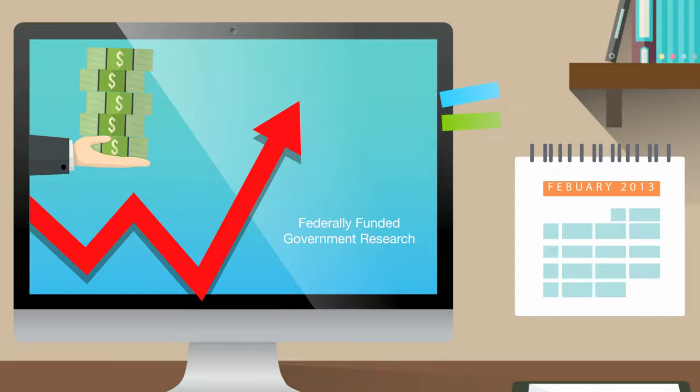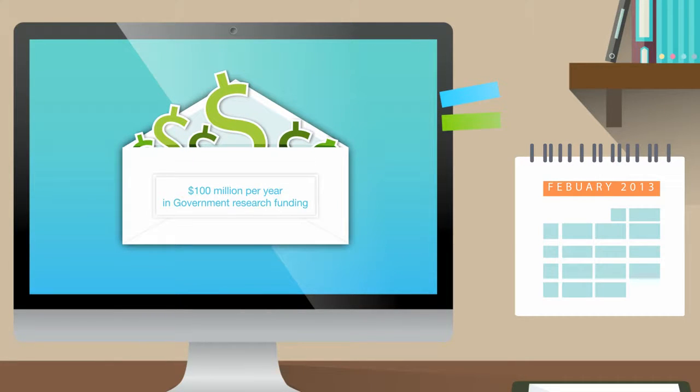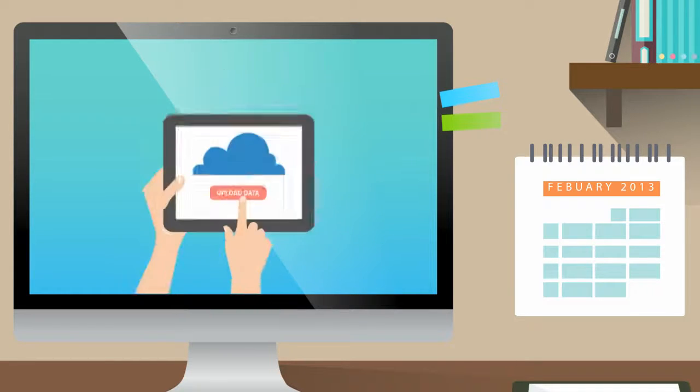This memorandum requires agencies that receive more than $100 million per year in government research funding to make their data and publications more accessible to the public.